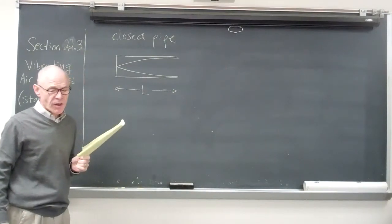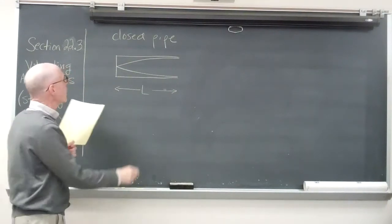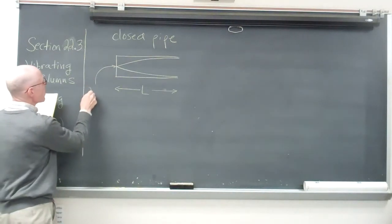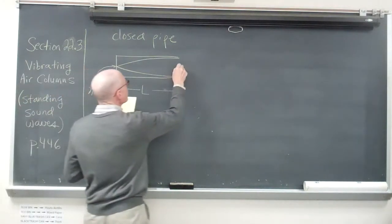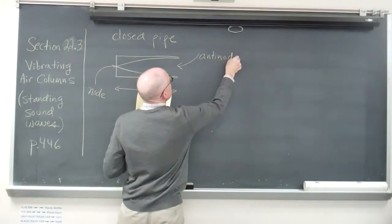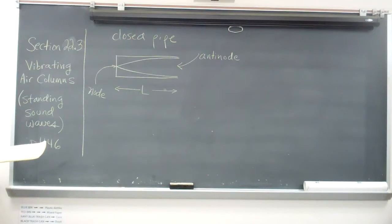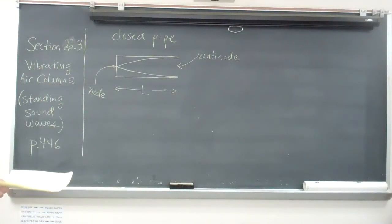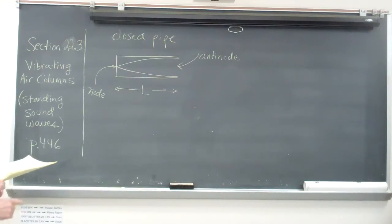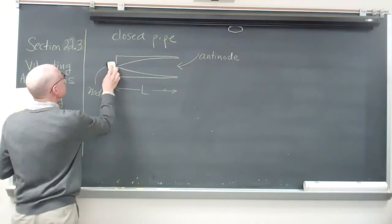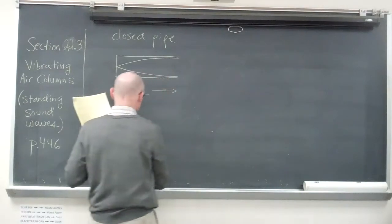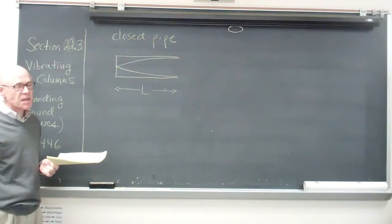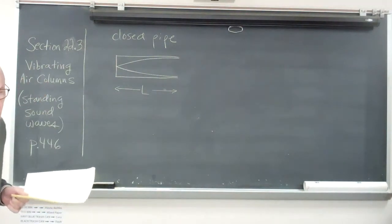We'll use several terms from chapter 21. The closed end of this pipe will always represent a node, and the open end will be an antinode. The closed end acts very similar to the fixed end of a string when we were looking at standing waves in a string. Now we need to figure out what part of a wavelength we're seeing, much like we did back in chapter 21.